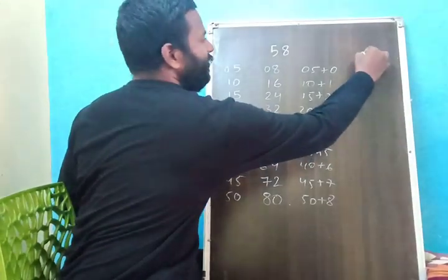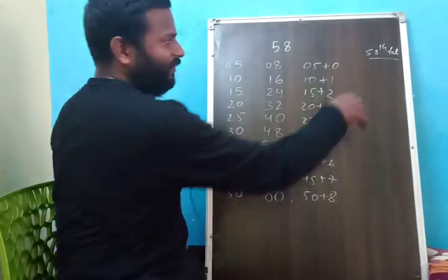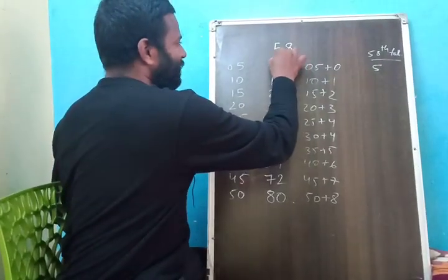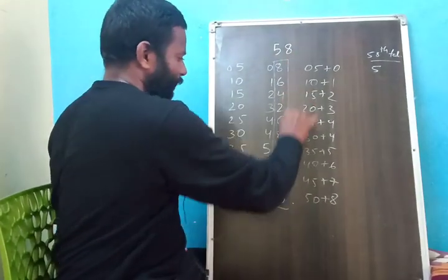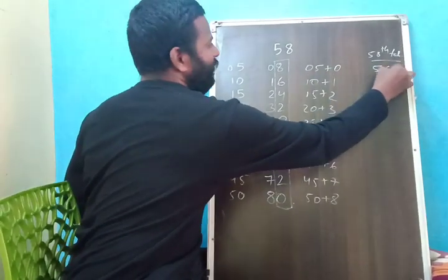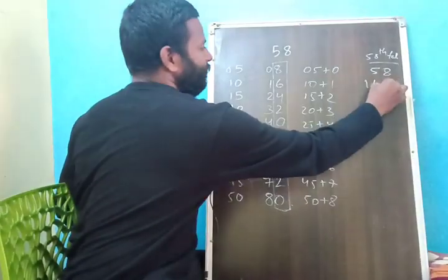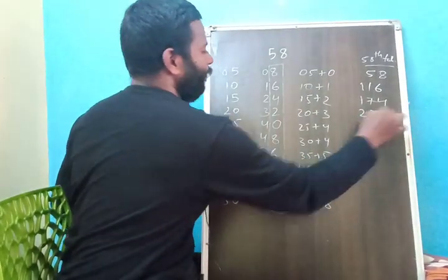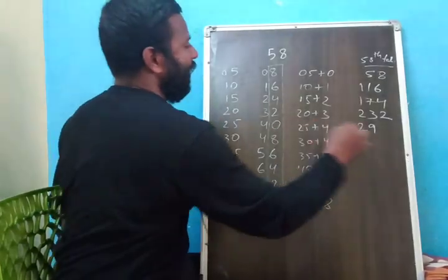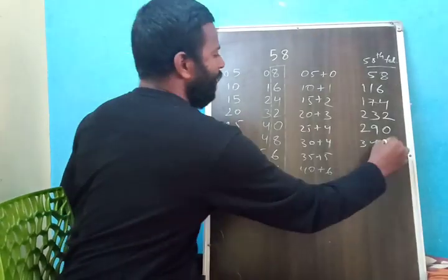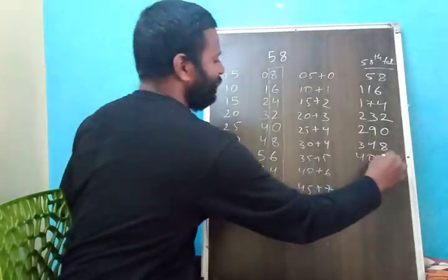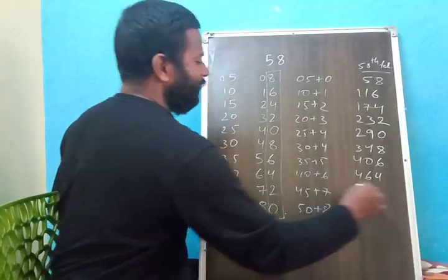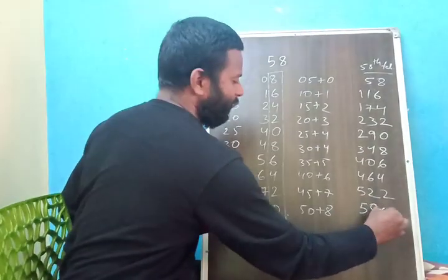Now finally, this gives us the 58th table. 5 plus 0 is 5, and the second digit is 8 — so 58. 10 plus 1 is 11, and the second digit is 6 — so 116. 15 plus 2 is 17, second digit 4 — 174. 20 plus 3 is 23, second digit 2 — 232. 25 plus 4 is 29, second digit 0 — 290. 30 plus 4 is 34, second digit 8 — 348. 35 plus 5 is 40, second digit 6 — 406. 40 plus 6 is 46, second digit 4 — 464. 45 plus 7 is 52, second digit 2 — 522. 50 plus 8 is 58, second digit 0 — 580.